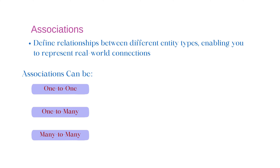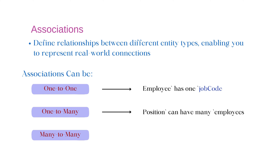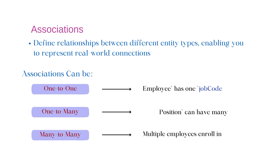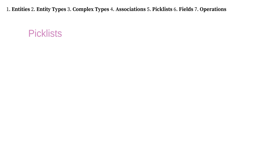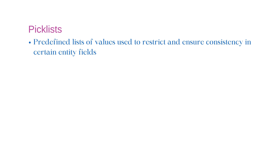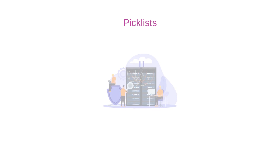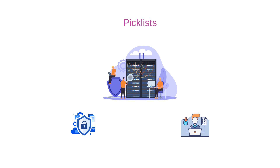Let's look at quick examples for these different types of associations. In case of one-to-one, we have an employee which has one job code. For one-to-many, a position can be assigned to multiple employees. In case of many-to-many, multiple employees can enroll into multiple learning events. The next data model object is Picklist. A picklist is a predefined list of values used to restrict and ensure consistency in certain entity fields. Picklists help maintain data integrity and simplify data entry.